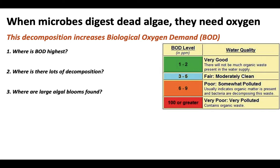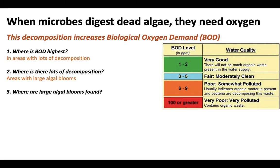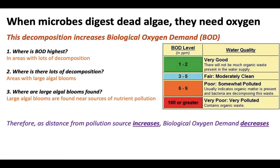Let's think about three questions: Where is biological oxygen demand the highest? Where is there lots of decomposition? And where are large algal blooms found? BOD is highest in areas with lots of decomposition. Areas of high decomposition have large algal blooms — they need something to decompose. And large algal blooms are found near sources of nutrient pollution. So as we get further and further from the source of the pollution, biological oxygen demand decreases, and therefore dissolved oxygen will increase.